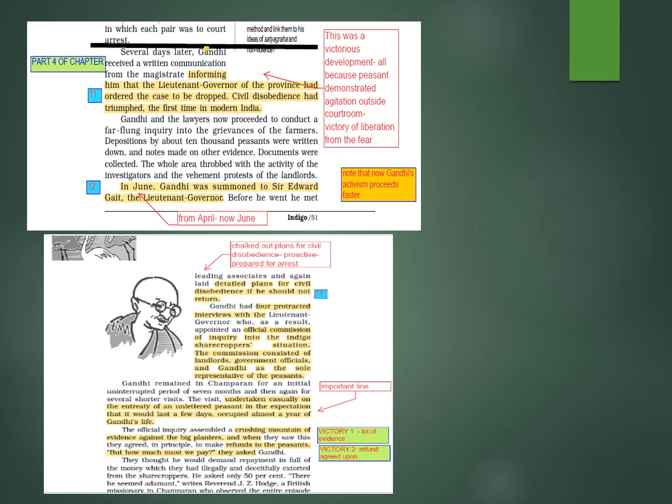The Champaran episode was ending and victory was close. The official inquiry assembled a crushing mountain of evidence against the big planters. When they saw this evidence, they agreed in principle to make refunds to the peasants. Victory one: lots of evidence produced. Victory two: refund was agreed upon.